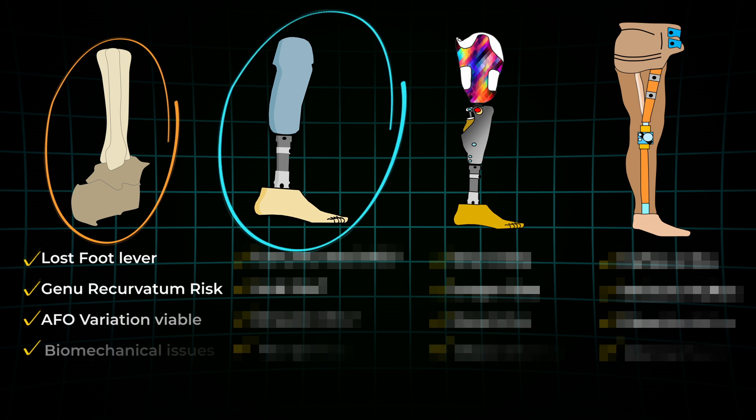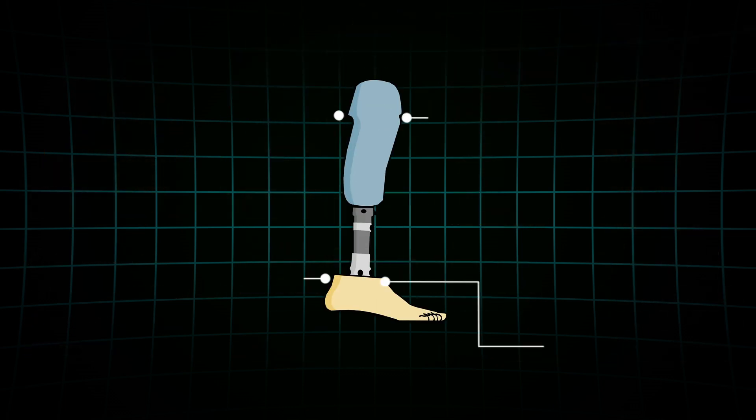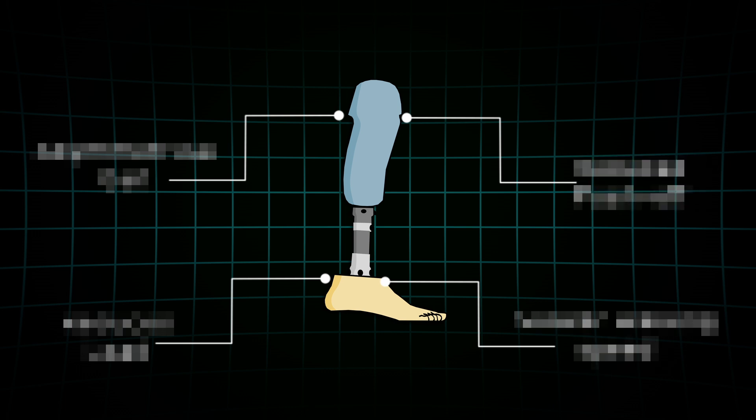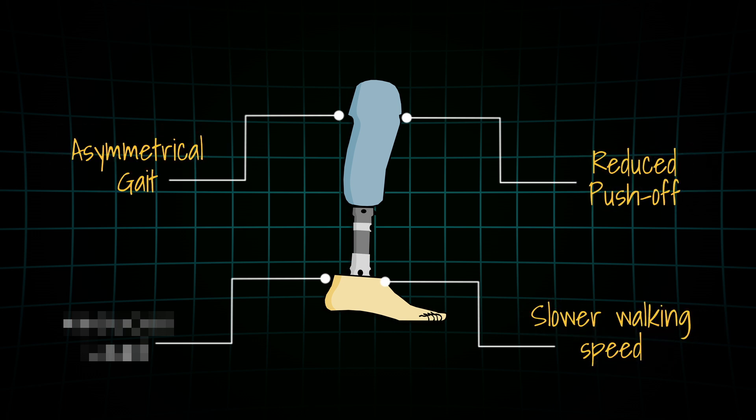Now let's look at trans-tibial amputations. Even here, there are some classic differences compared to non-amputees: slightly slower walking speed, reduced push-off, asymmetrical gait, and less load on the prosthetic side.